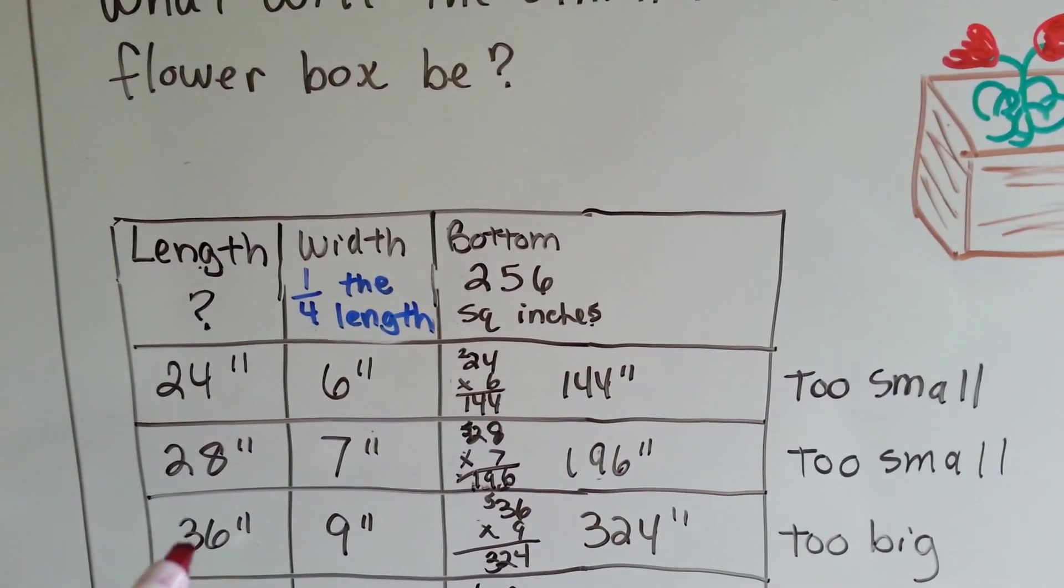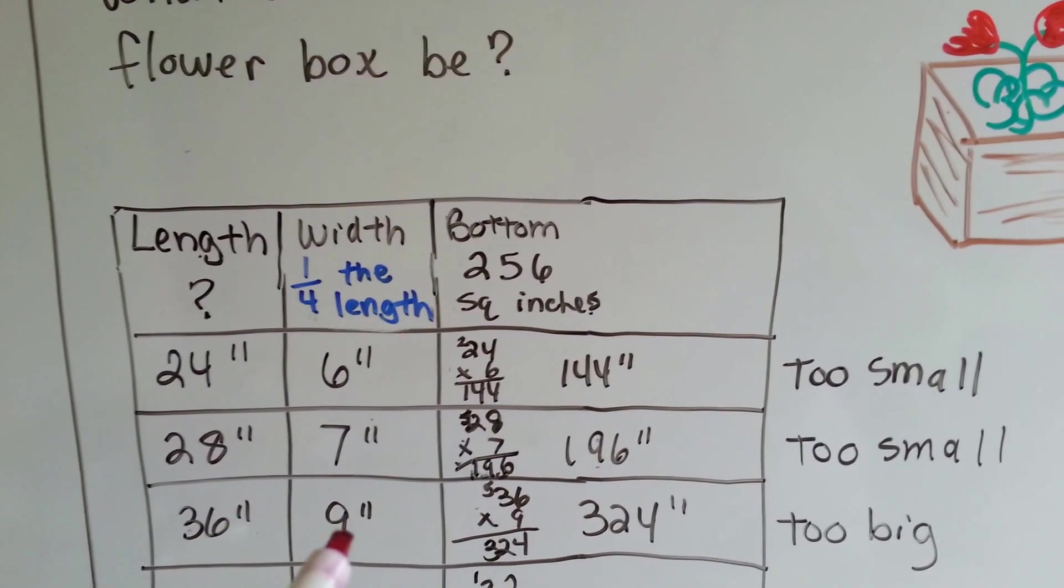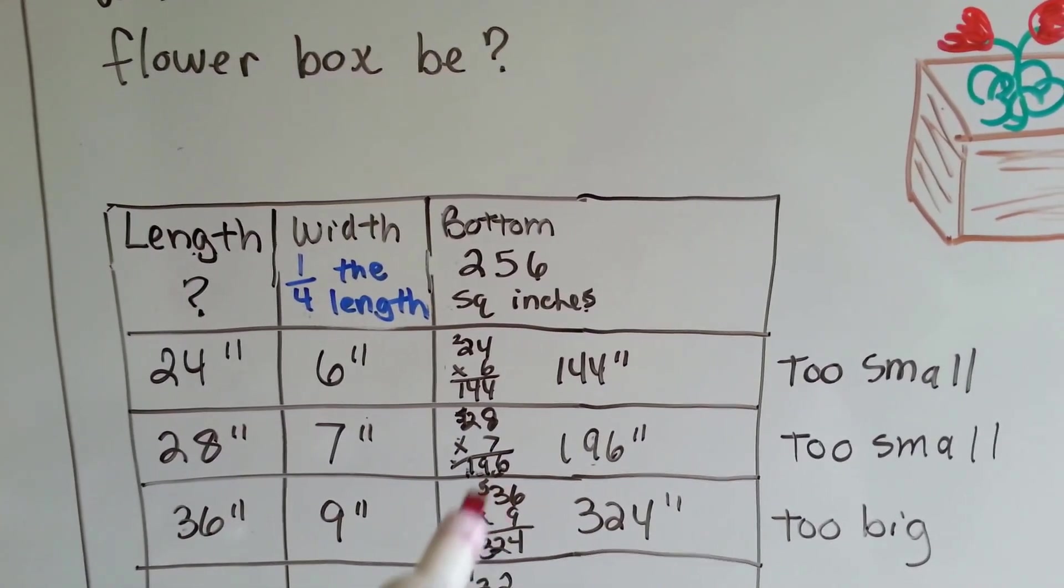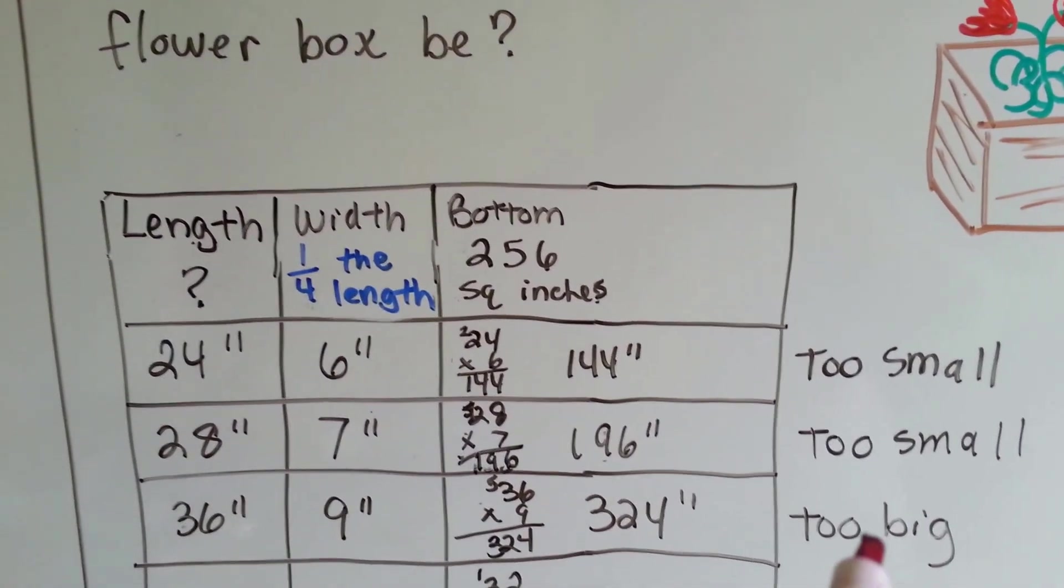So I tried going bigger. I tried thirty-six inches and nine, because nine times four is thirty-six. Nine would be one-fourth of it. When I multiplied them together, I got three hundred and twenty-four inches. That's way too big.